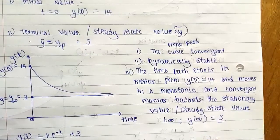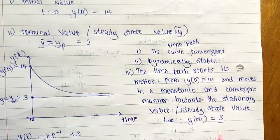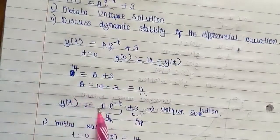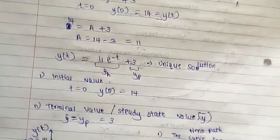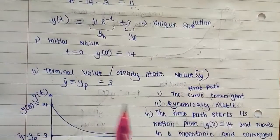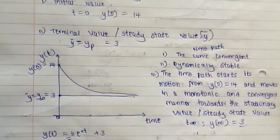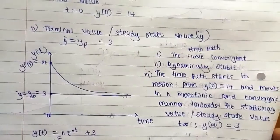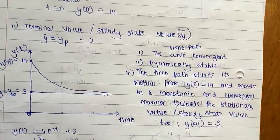So that is how you obtain the unique solution, as obtained here, and then do the discussion of dynamic stability by finding the initial value, the terminal value, drawing the curve or time path, and discussing whether the curve is convergent or divergent — that is, stable or unstable — and describing how it moves monotonically and convergently. Thank you.